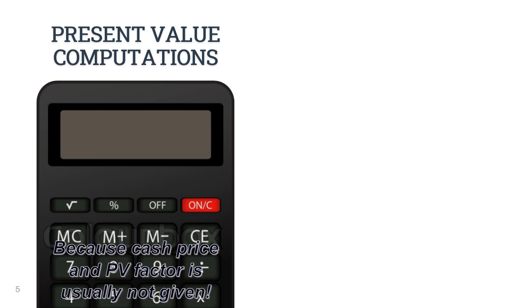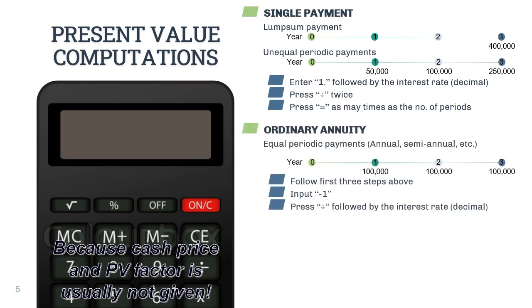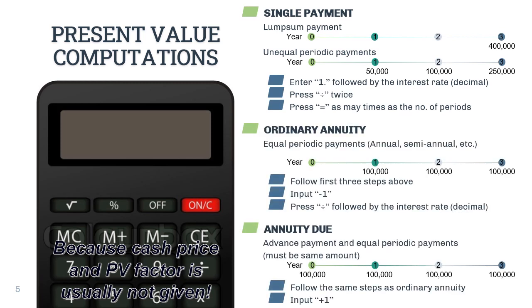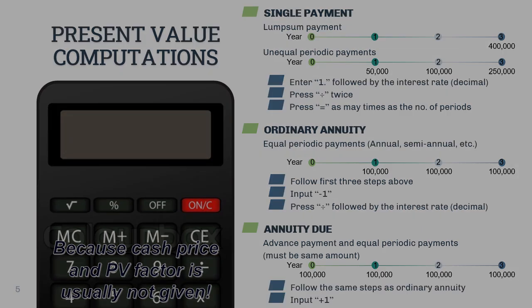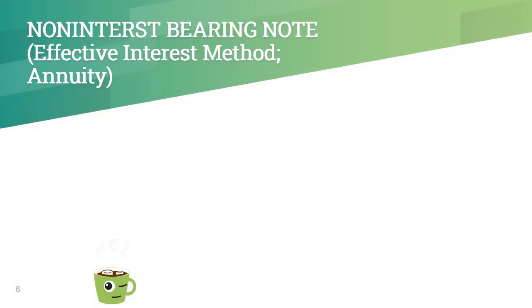Here we have the steps to compute for the PV factor for lump sum, ordinary annuity, and annuity due. These steps should be doable in any basic calculator model. Depending on your calculator model, there can be several alternative ways to compute for the PV factor. A good grasp of the concept of time value of money will help you better understand the effective interest method used in accounting for non-interest-bearing notes when no cash price is given.